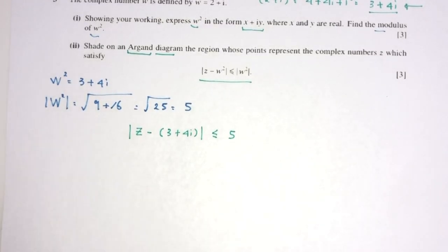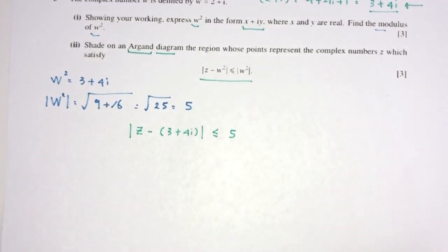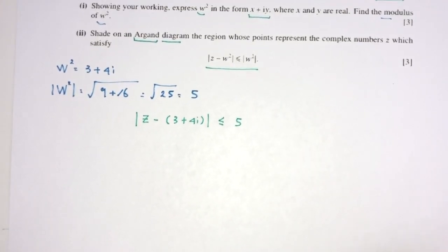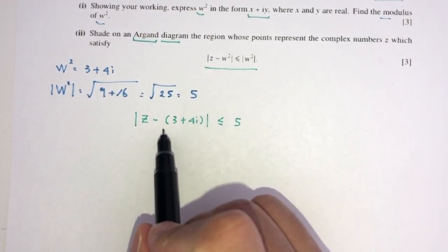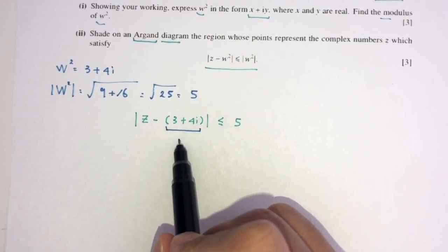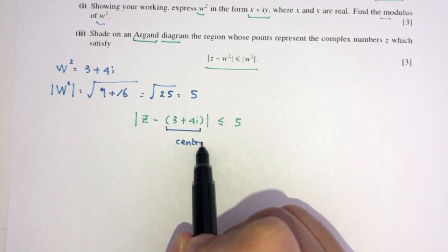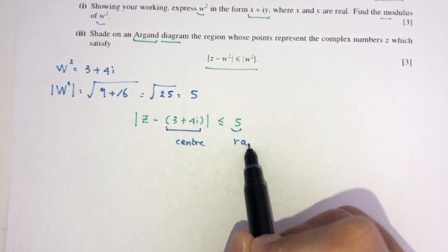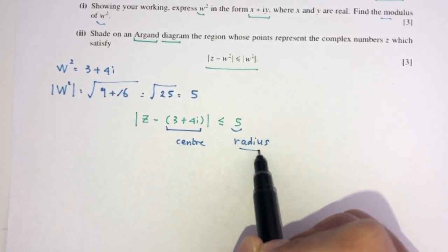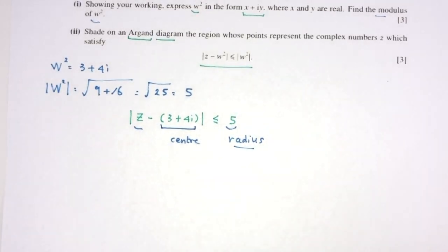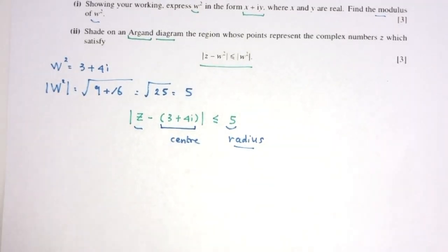This is in the form of a circle. The center is 3 + 4i and the radius is 5. We can draw this on an Argand diagram using a compass.